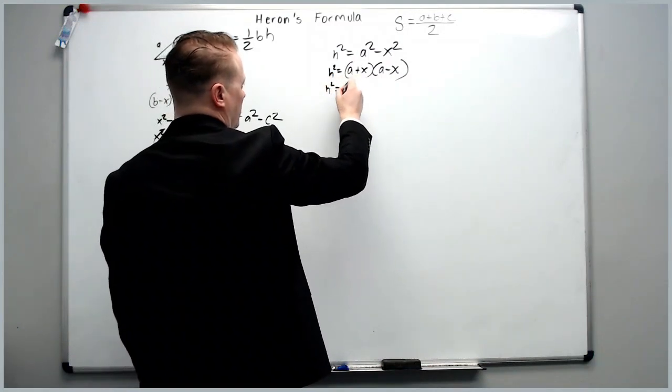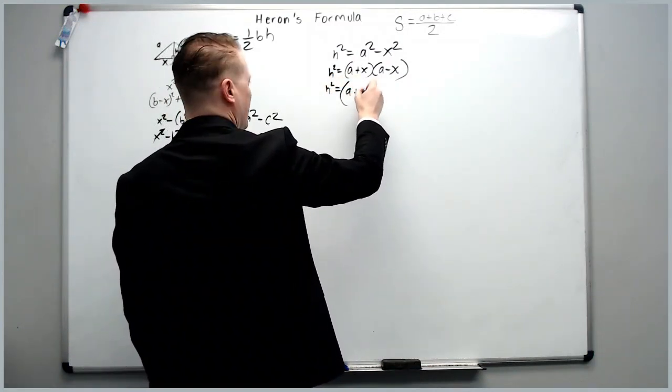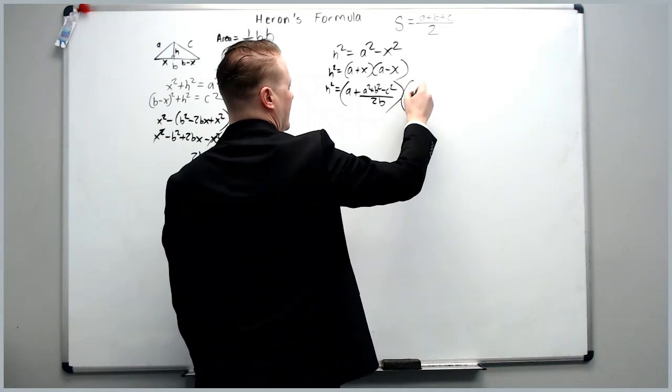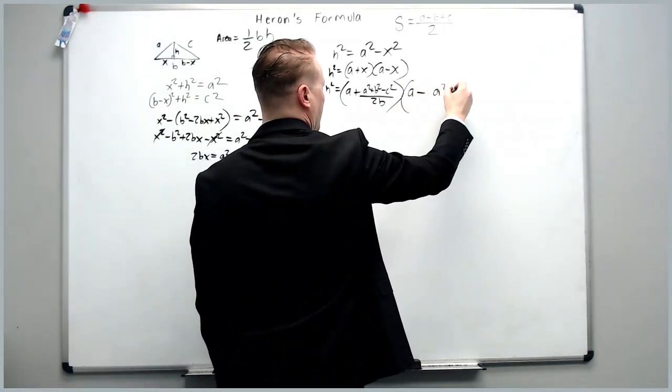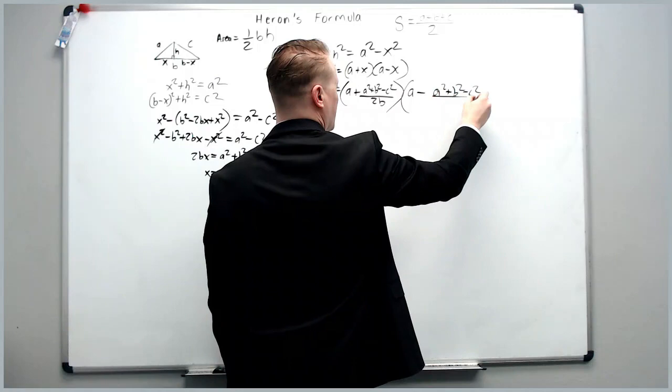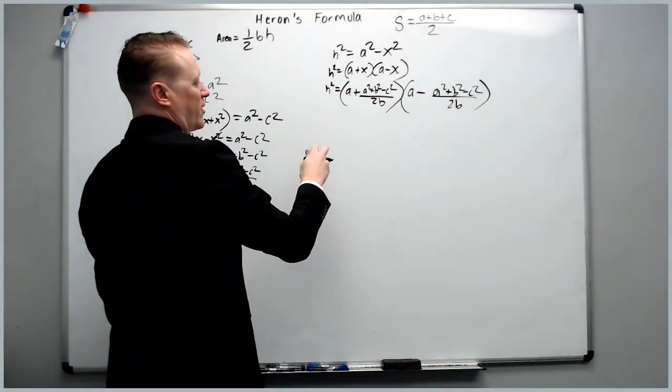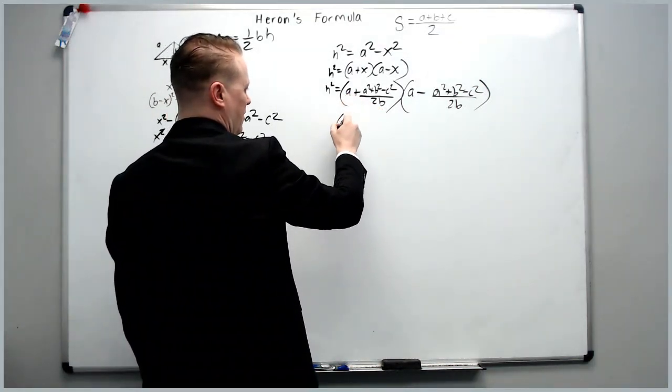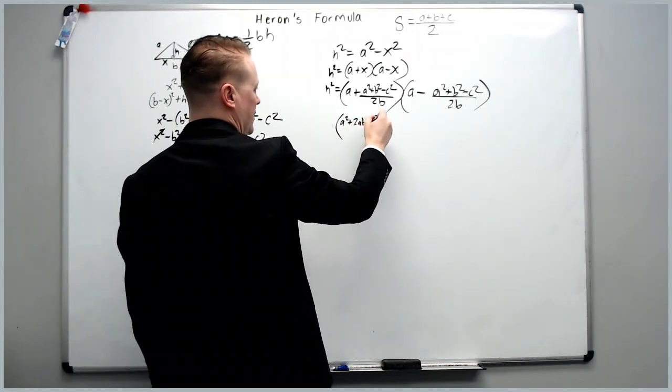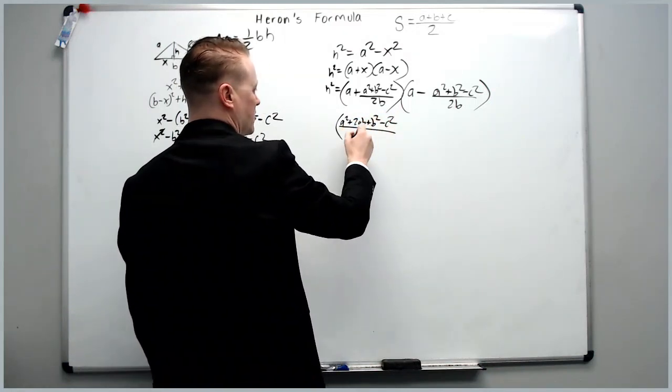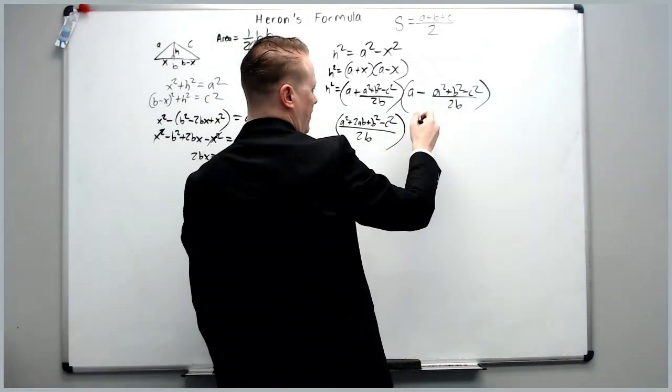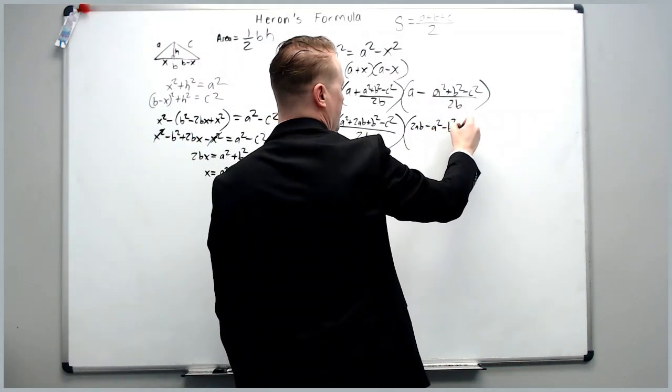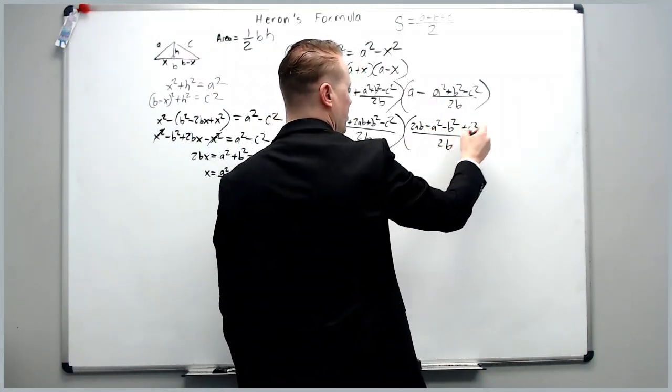H squared equals A plus A squared plus B squared minus C squared over 2B, and A minus A squared plus B squared minus C squared over 2B. Okay, progressing on, we need common denominators. So we're going to multiply this by 2B. It's going to become A squared plus 2AB plus B squared minus C squared over 2B. Over here, you're going to get 2AB minus A squared minus B squared plus C squared over 2B.